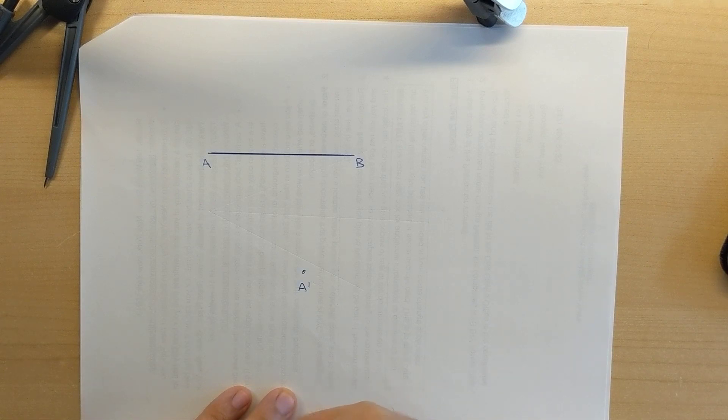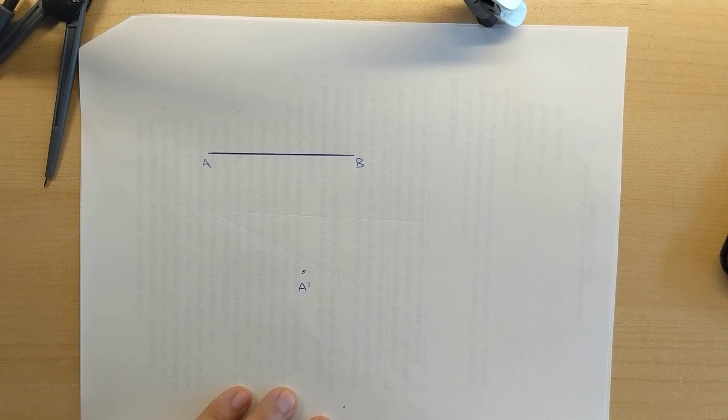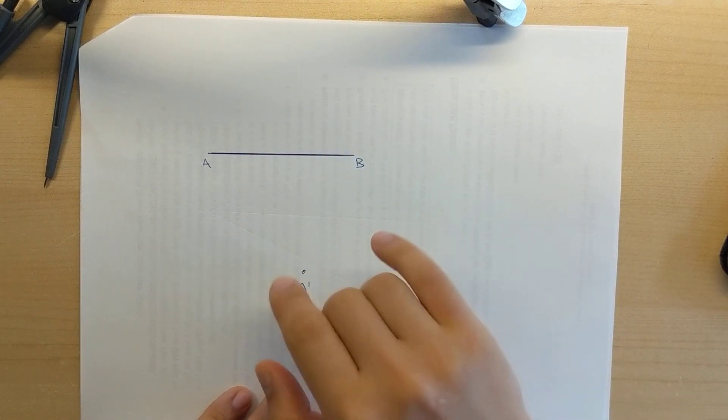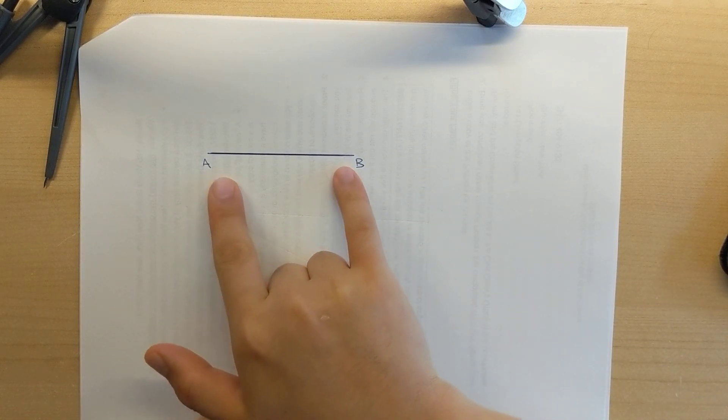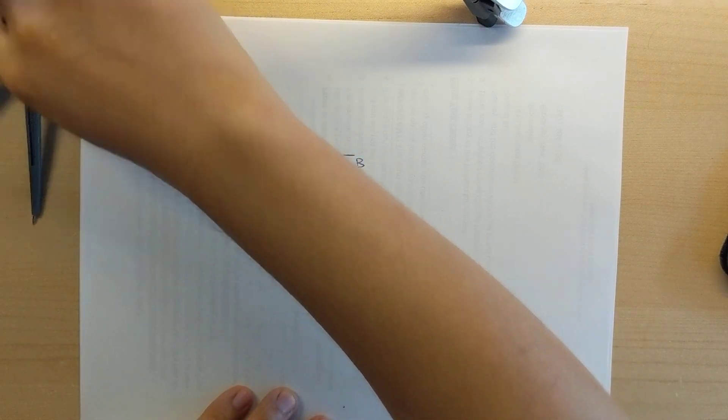So there's no restriction or rule as to what is the orientation of A prime, B prime, meaning I can place A prime, B prime at any angle that I wish. All I want to do is just copy that segment here. So how am I going to do that?